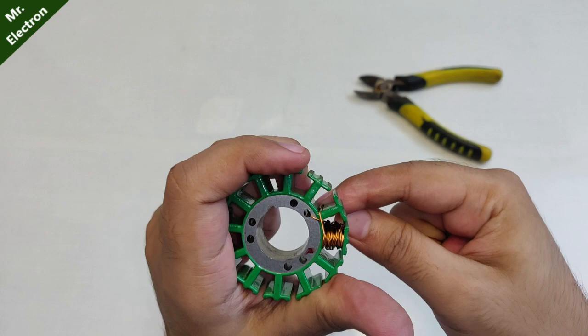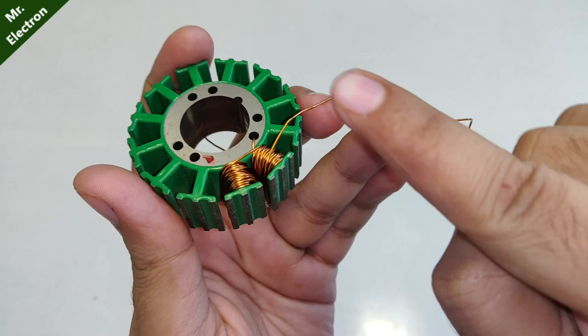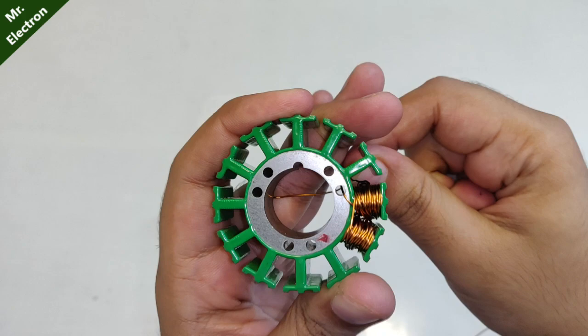Now guys, initially we were going in the clockwise direction, but after completing two poles you have to go counterclockwise for the next two poles. One turn, two turns, three turns, and same 25 number of turns per pole.